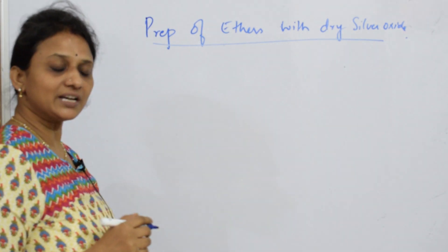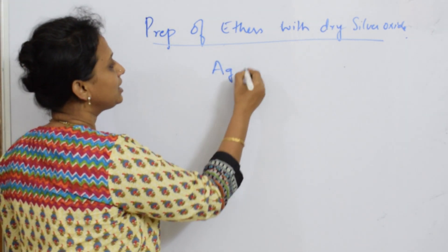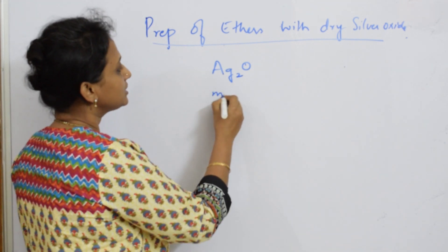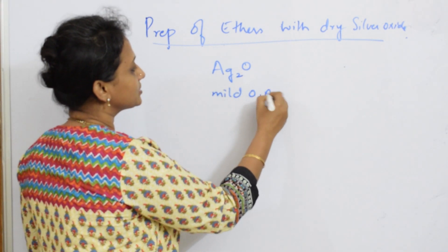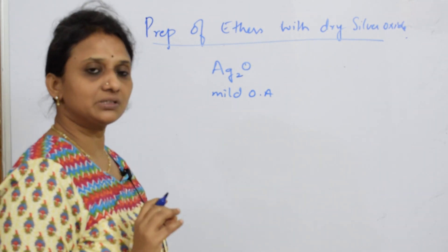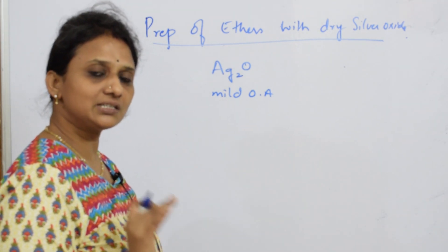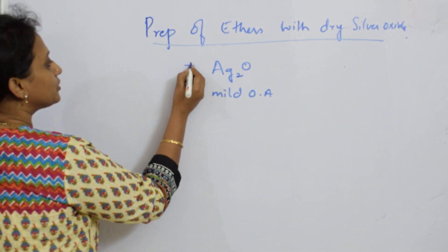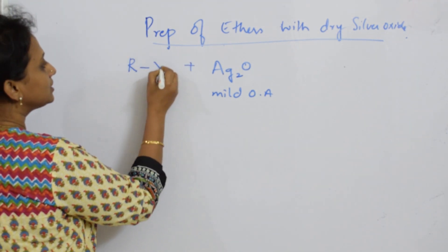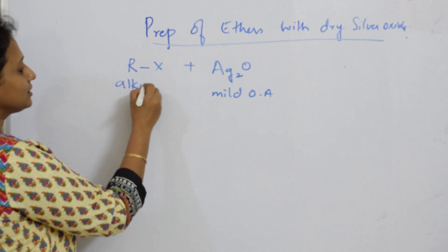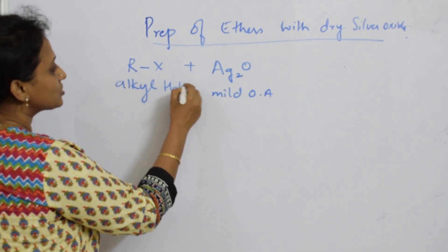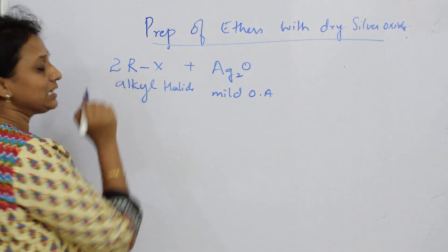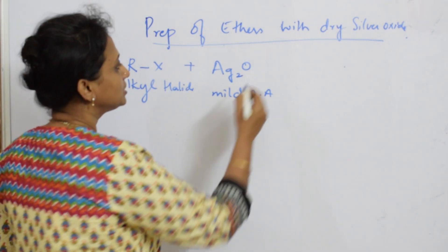Dry silver oxide is a mild oxidizing agent. What does it do? It's going to add oxygen to the given compound. So whenever you see dry silver oxide, remember: it is a mild oxidizing agent — it will just add oxygen to the given compound. Here, I'm going to take an alkyl halide, and when dry silver oxide is added, it adds oxygen to this. Suppose I have to prepare an ether — I'll pick up two moles of the alkyl halide.